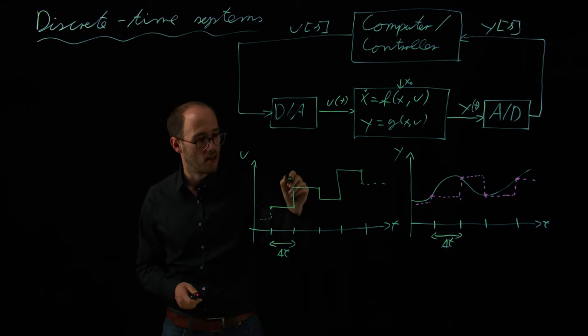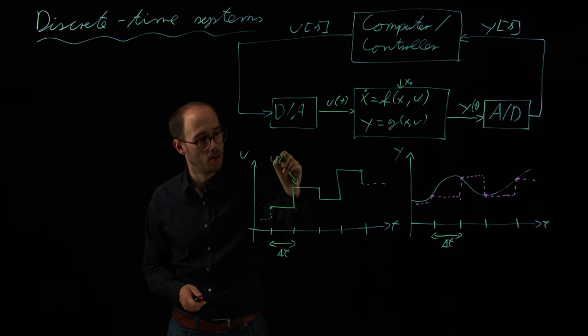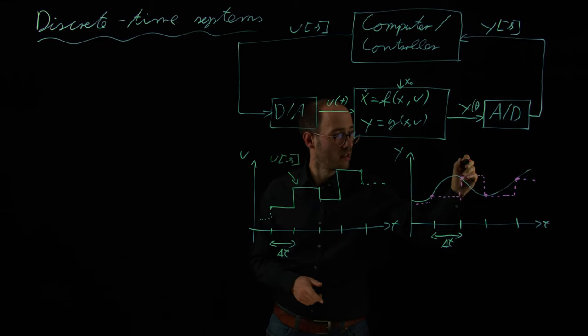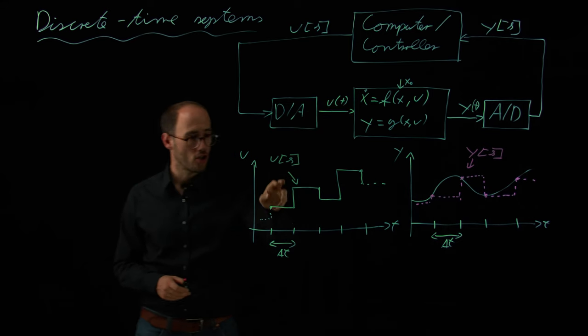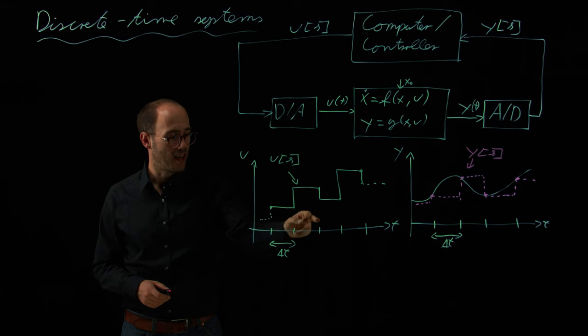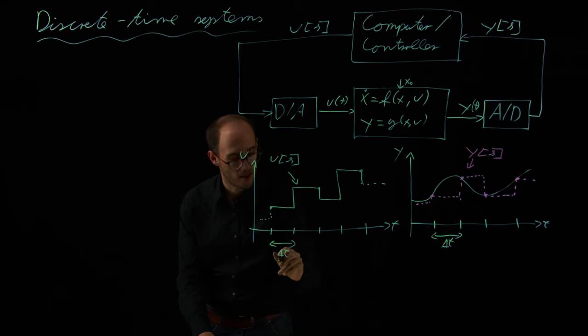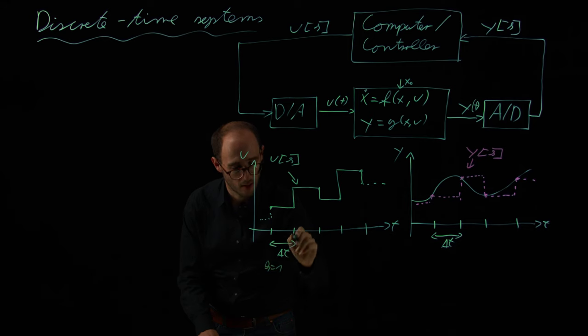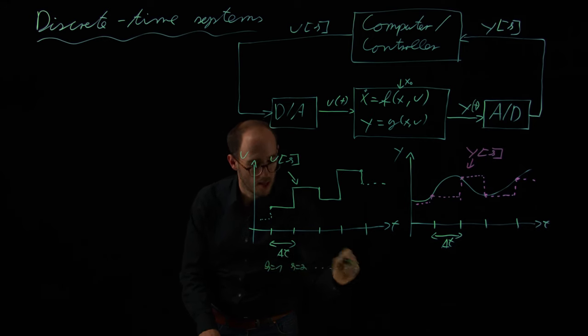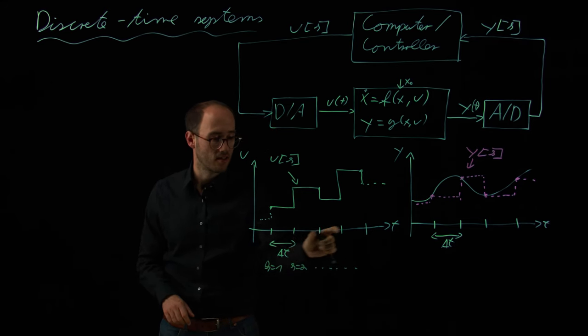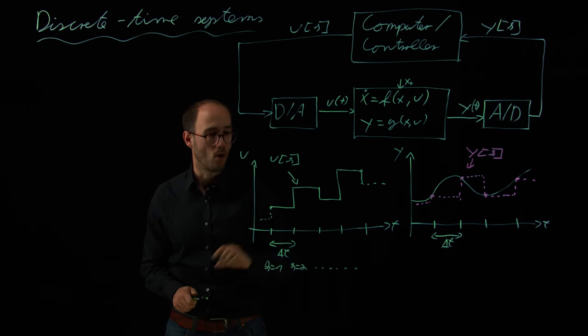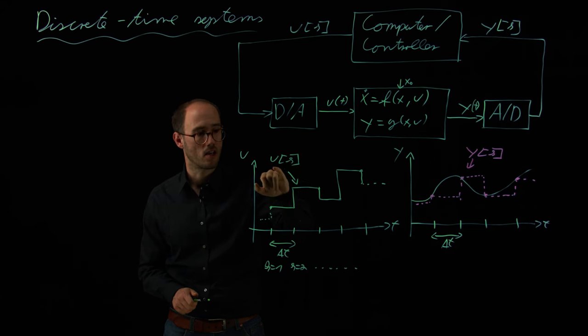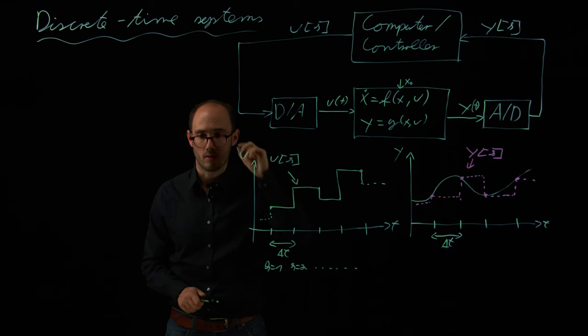So this would be our u of k, this would be our y of k, and this notation k basically means that this is our k-th time step. So this here could for example be k equals 1, this could be k equals 2, and so on, because we assume here an equidistant time grid. We can just numerate these different time points in an ascending order, and this is represented by this bracket notation u square bracket k, basically meaning this is a discrete time signal which is defined on a discrete time grid.